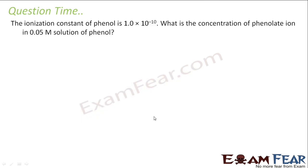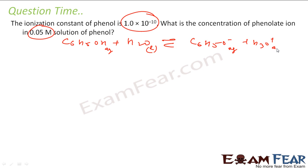So let's take one question here. The ionization constant of phenol is 10 to the power minus 10. What is the concentration of phenolate ion in 0.05 M solution of phenol? So the reaction is like this: C6H5OH plus H2O will be in equilibrium with C6H5O minus and H3O plus. This is aqueous, this is liquid, this is aqueous.